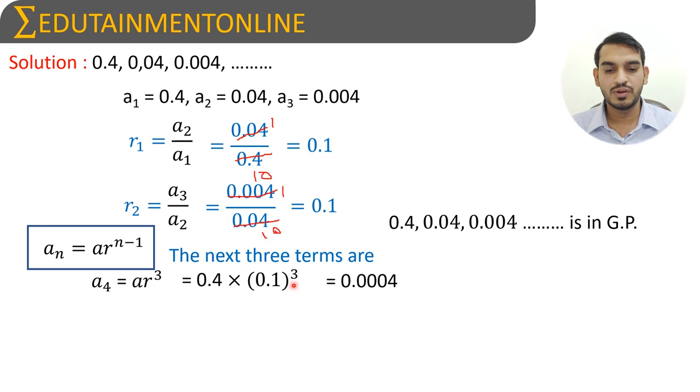Similarly, a₅ equals a × r⁴, which is 0.4 × 0.1⁴. If we multiply, we get 0.00004.